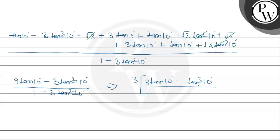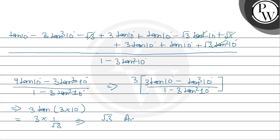This is exactly the formula for tan(3a): tan(3a) = (3tan a - tan³a) / (1 - 3tan²a). So this equals 3·tan(3×10°) = 3·tan(30°) = 3 × (1/√3) = √3. So the required answer is √3. Hope you understand it well, best of luck!